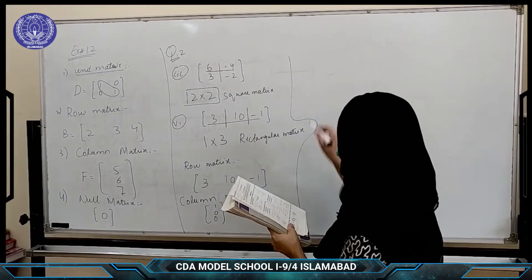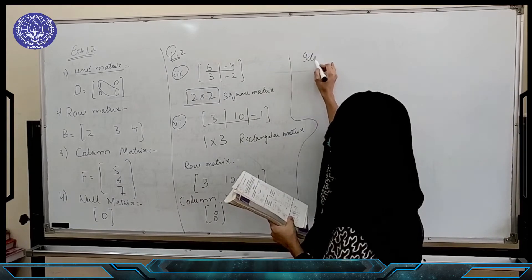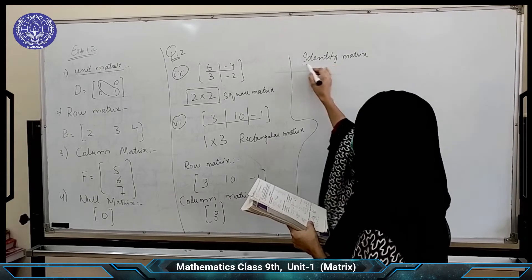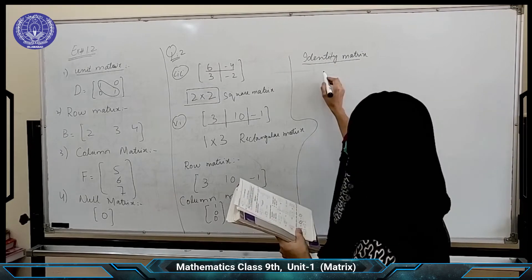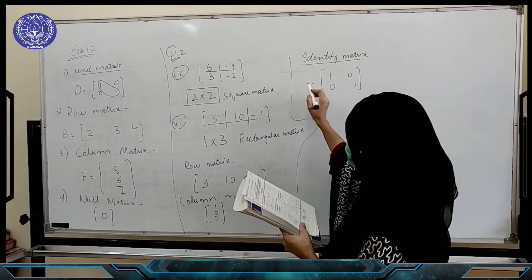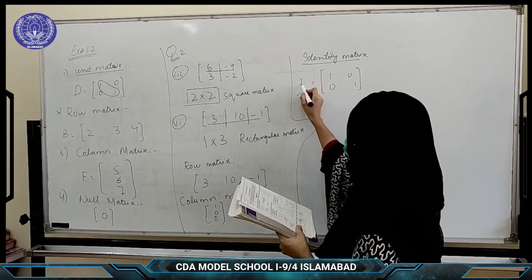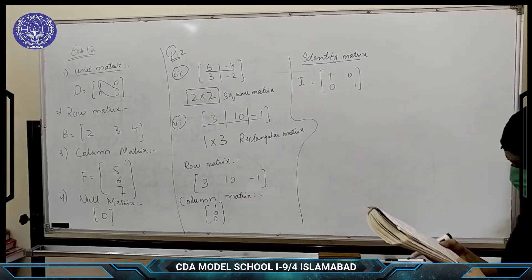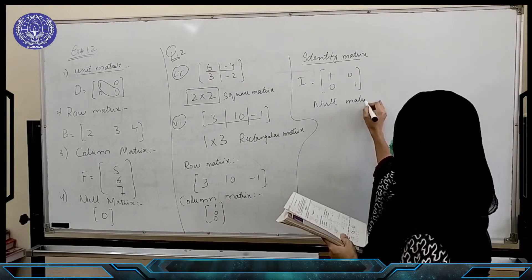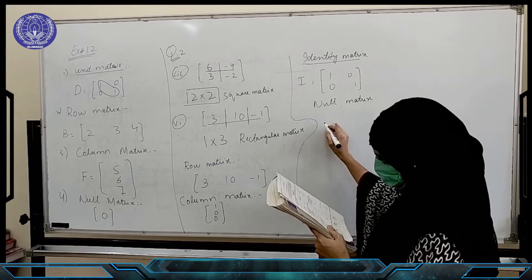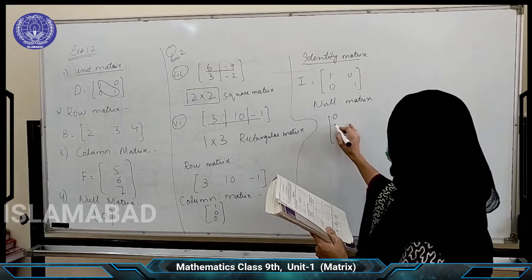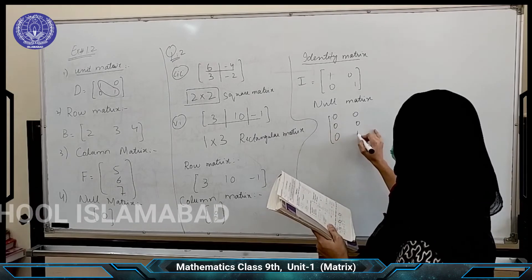Identity matrix — identity matrix and unit matrix are the same, whose main diagonal entries are all 1. It is called the identity matrix and we denote it by I. Null matrix — a null matrix is one whose all entries are 0.